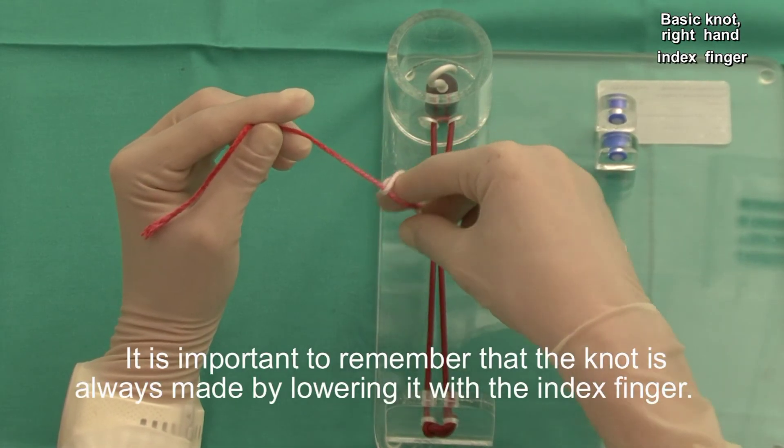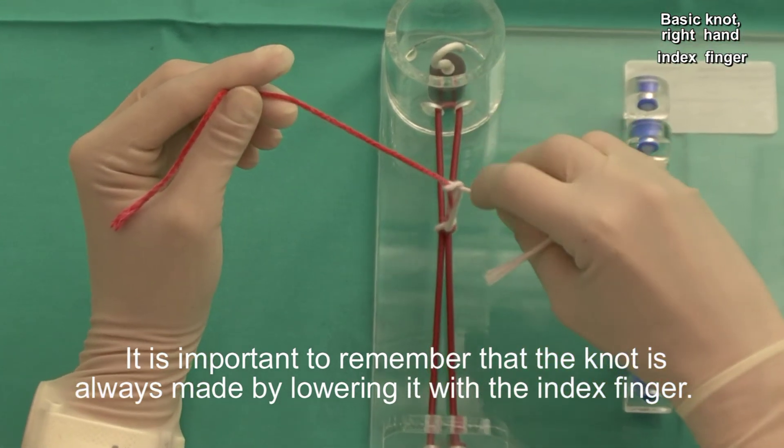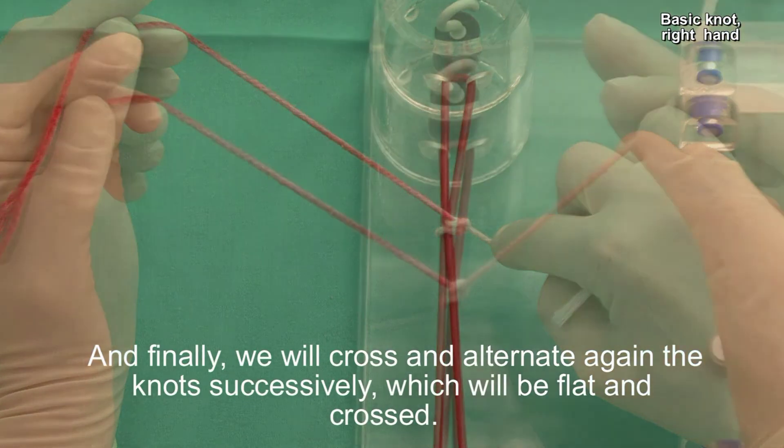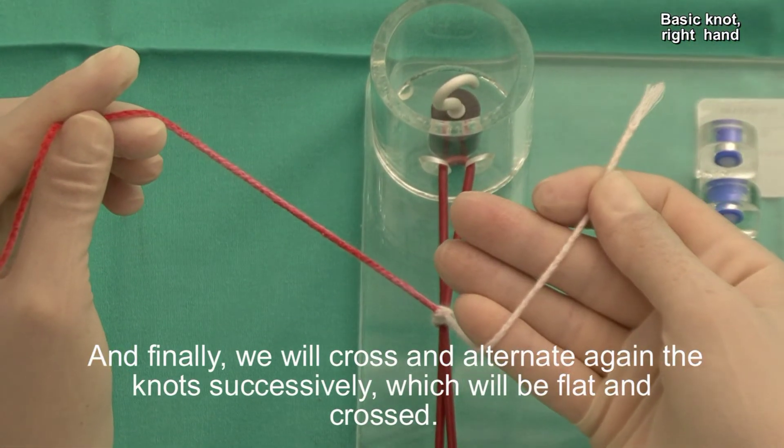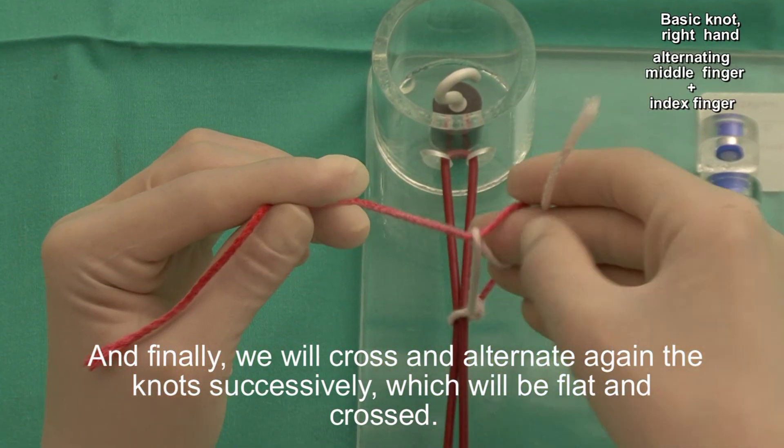It is important to remember that the knot is always made by lowering it with the index finger. And finally, we will cross and alternate again the knots successively, which will be flat and crossed.